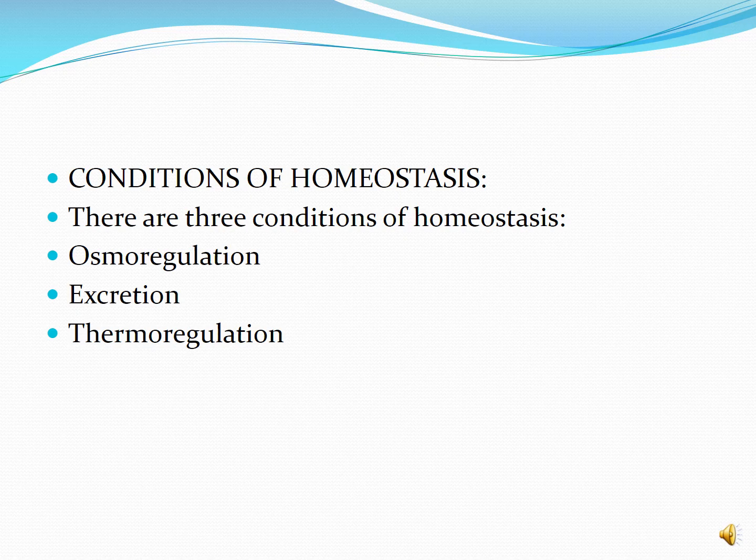There are three conditions of homeostasis: osmoregulation, excretion, and thermoregulation. Osmoregulation is the balancing of water inside the body. Excretion is the removal of waste products from the body. Thermoregulation is the balancing of body temperature. We will explain all these topics in detail later.